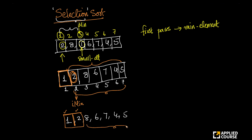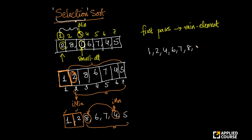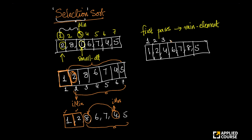Now I am left with the rest of these elements. I start comparing 8 with 6 — 6 is smaller. 6 with 7 — 6 is smaller. 6 with 4 — 4 is smaller. 4 with 5 — 4 is smaller. Now I have the index of my minimum element. I will swap these two. When I swap, I get: 1, 2, 4, 6, 7, 8, and 5. My first three elements are already sorted.